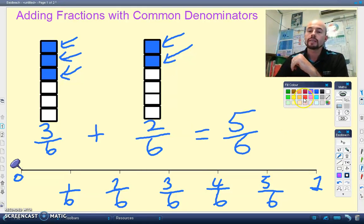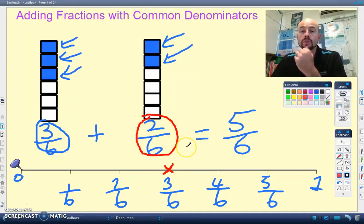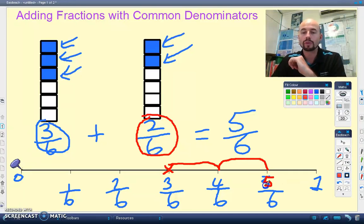So we started off with three sixths. Here's three sixths I'm going to put across there. And I want to add two sixths. I'm just going to count along two more sixths. One, two, and there's my answer again. Five, should be five. Five sixths.